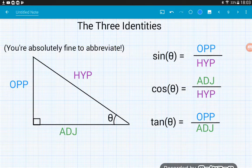So our three identities. Sine of theta is equal to the length of the opposite divided by the length of the hypotenuse. Cos of theta is equal to the length of the adjacent divided by the length of the hypotenuse. And tan of theta is equal to the length of the opposite divided by the length of the adjacent.